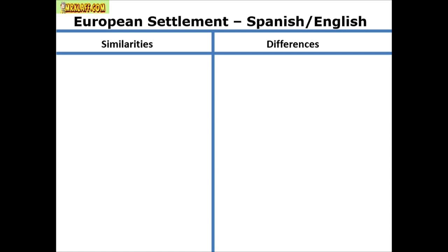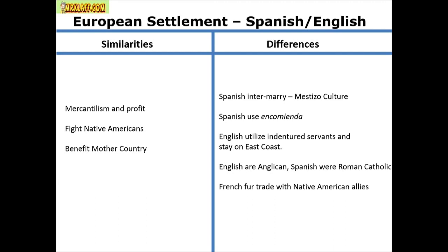European settlement: similarities between Spanish and English — both looking at mercantilism for profit, both dealing with Native Americans, both trying to benefit the mother country. Differences: the Spanish intermarry and create a mestizo culture, impose the encomienda system — a human rights violation. The English use indentured servants and are predominantly Anglican, while the Spanish are Roman Catholic. The French intermarry and ally with Native Americans under the fur trade — hence the French and Indian War.